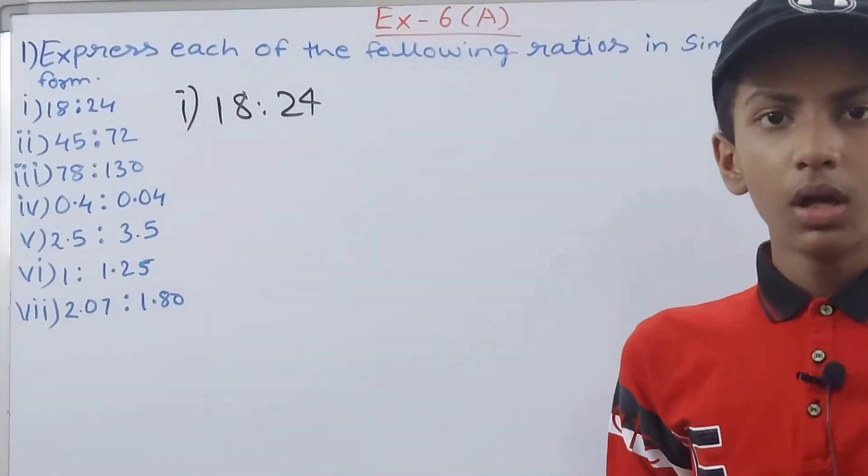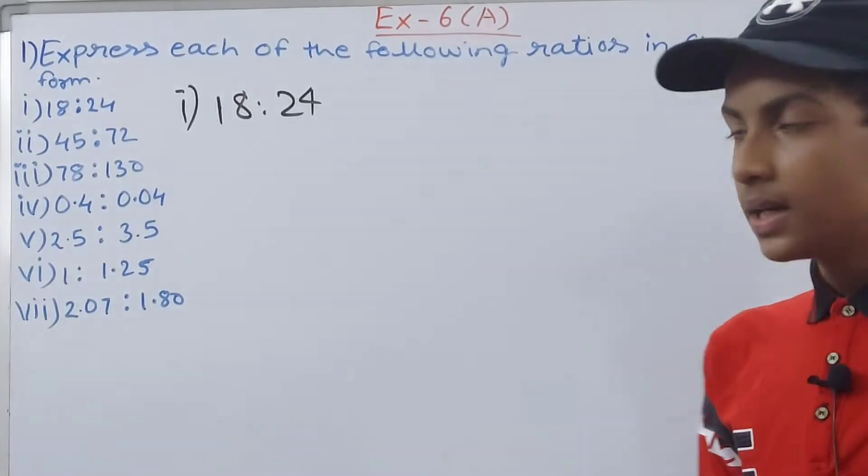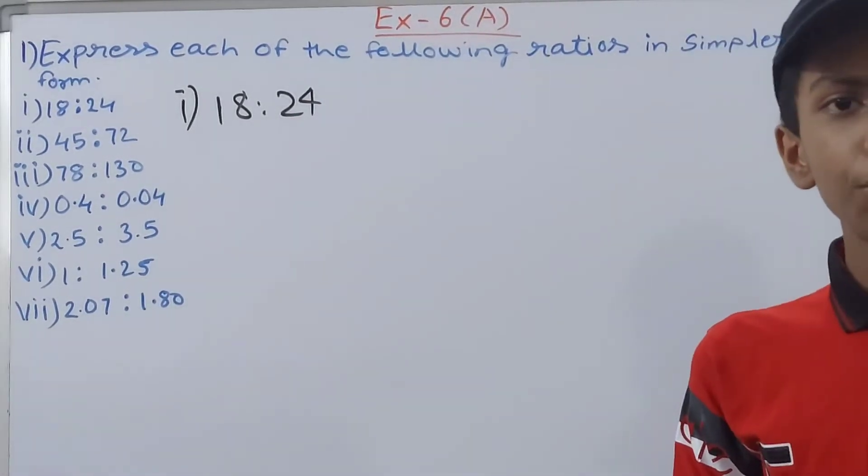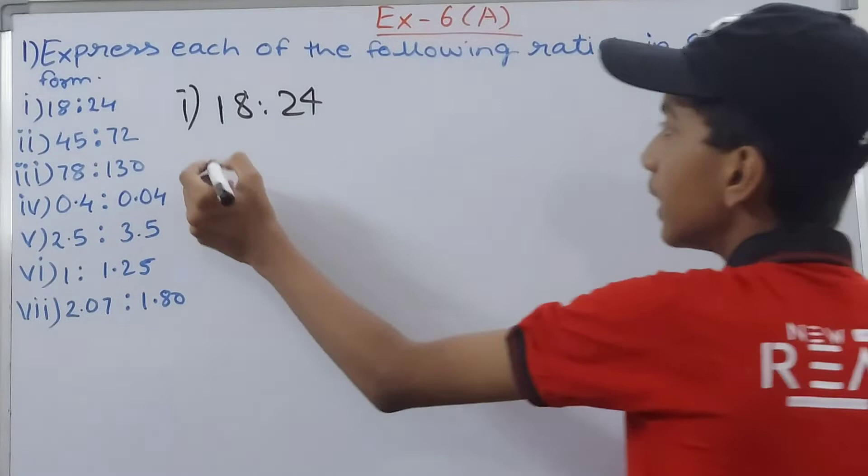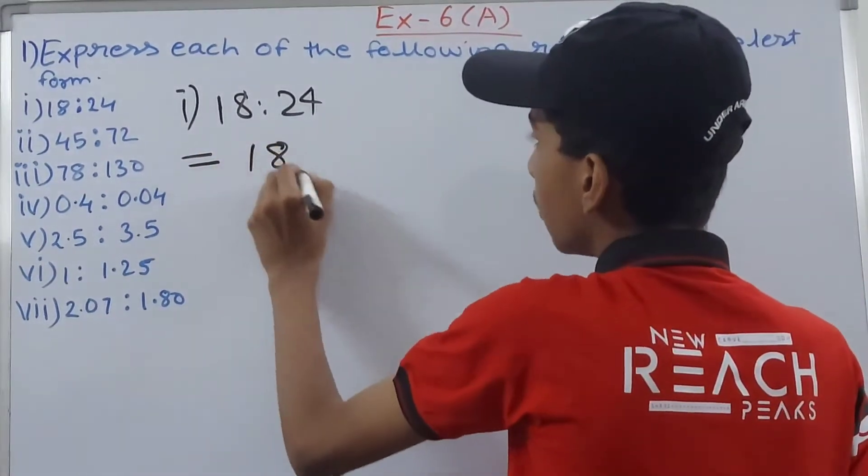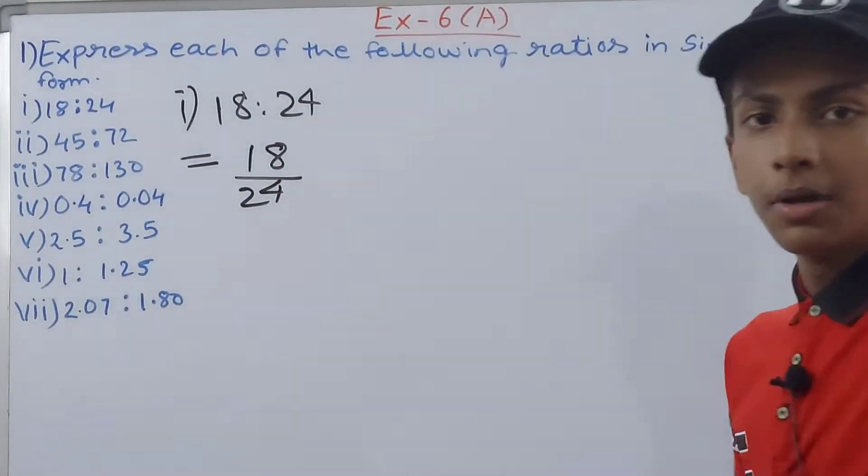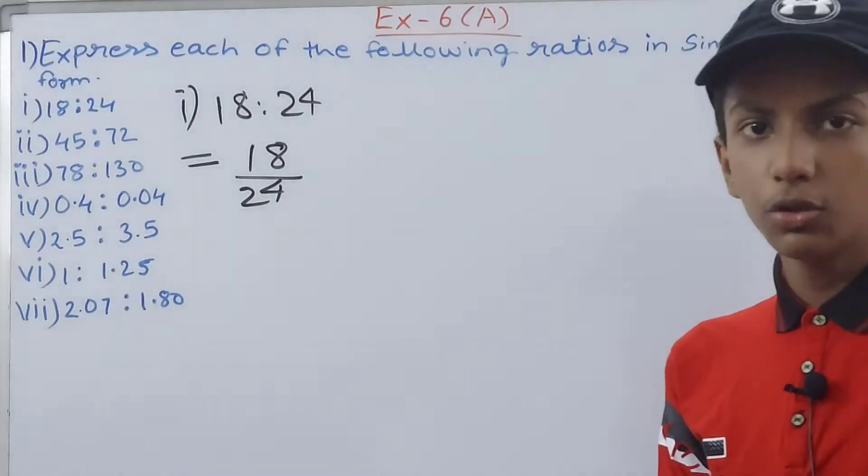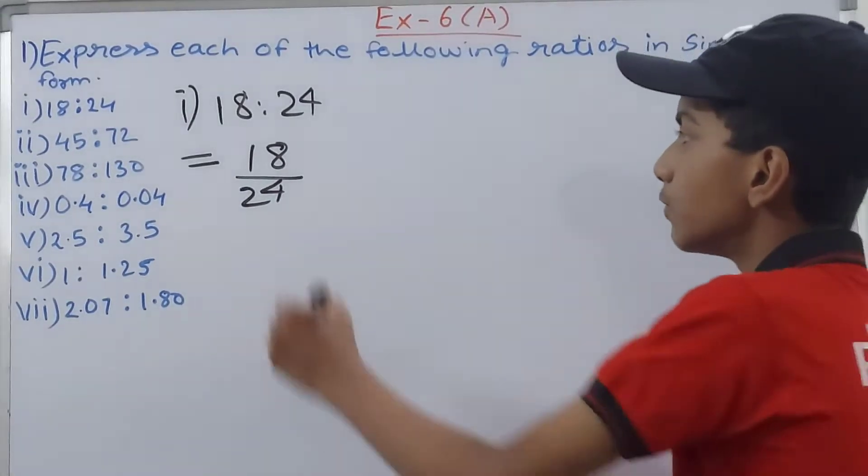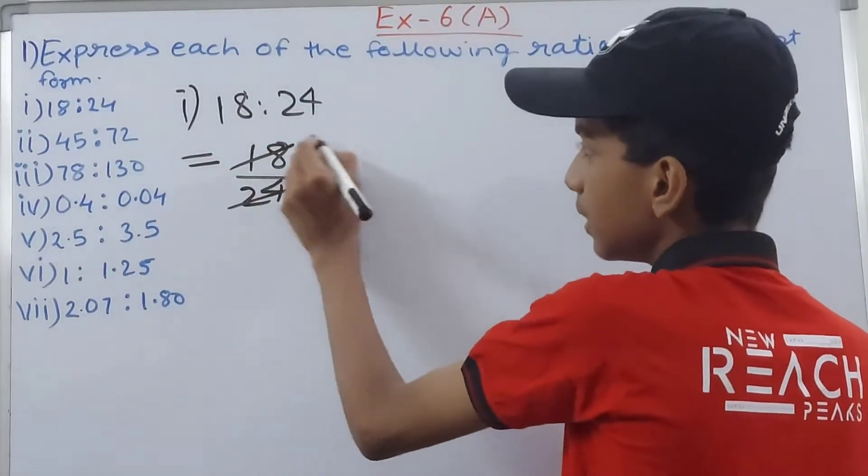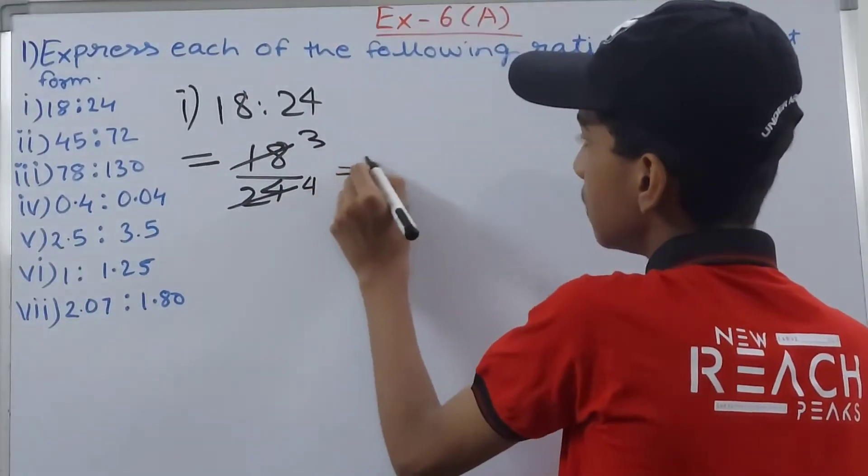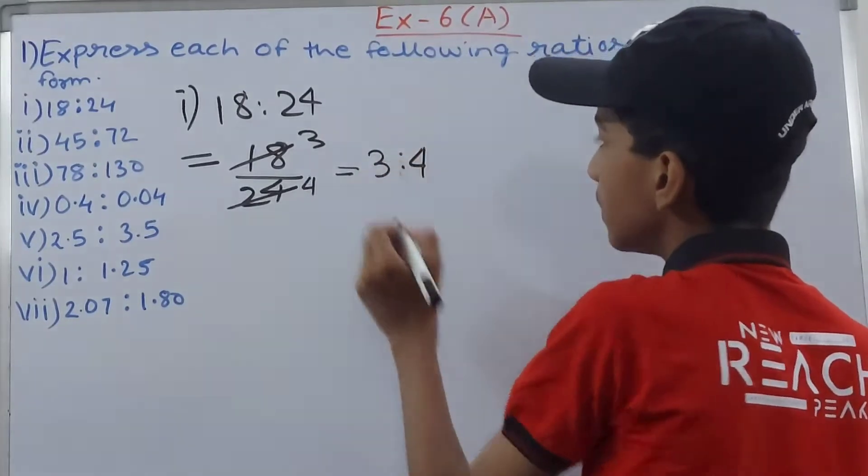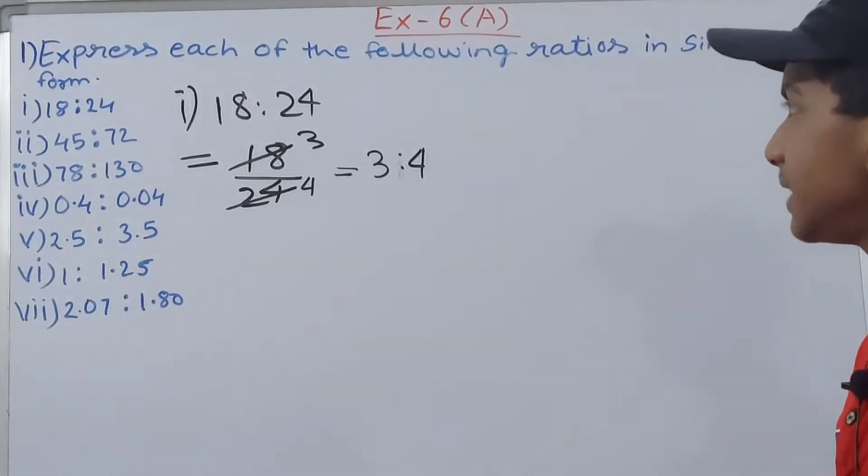Now when it comes to simplifying our ratio, first of all you can convert this ratio into a fraction. So you will get here 18 upon 24. And now you can simply simplify a fraction just like we simplify a ratio. For that we have to simplify this fraction, so we will get 3 and 4. So 3 is to 4, and this becomes your simplest ratio.